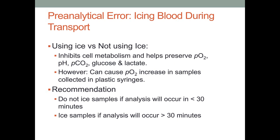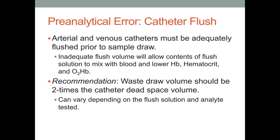Both arterial and venous catheters must be adequately flushed prior to a sample draw. An adequate flush volume allows contents of the flush solution to mix with blood and lower the hemoglobin, hematocrit, and oxyhemoglobin. The recommendation is that the waste draw volume should be at least two times the catheter dead space volume. This two-times recommendation can vary depending on the flush solution, its concentration, and the analyte being tested, but two times should generally be adequate.